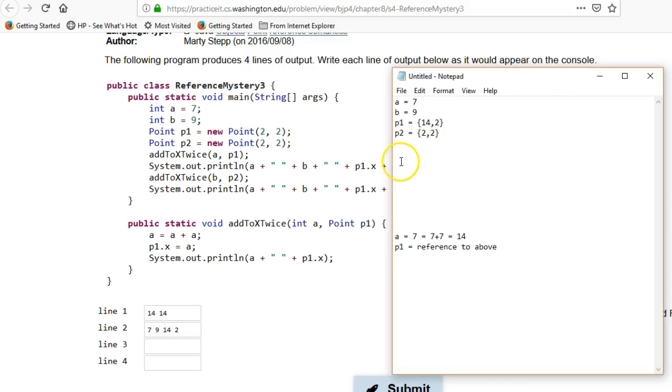Alright, so then it's gonna call add x twice, b and p2. So now we've got another call. And so now we've got a equals b, which was 9. And p1 equals, now we're passing in p2. So it's reference to p2 above. And I should really say reference to p1.